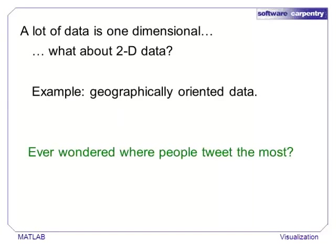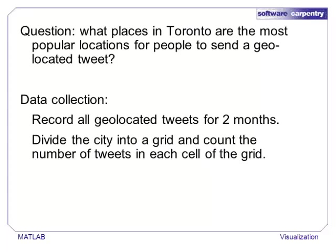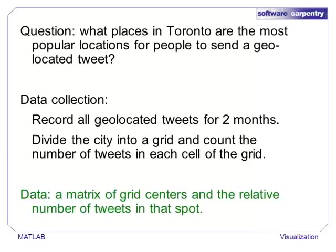Another way to visualize data is to treat a matrix as an image. In this example, we will examine a data set of public, geolocated Twitter messages near Toronto. We start with the question of from where in Toronto people are most likely to send a geolocated tweet. I recorded all geolocated tweets for two months in downtown Toronto. Then I divided the city into a grid and counted the relative number of tweets in each cell of the grid. The result is a data matrix where each point in the matrix is the relative number of tweets near a grid center on the map.